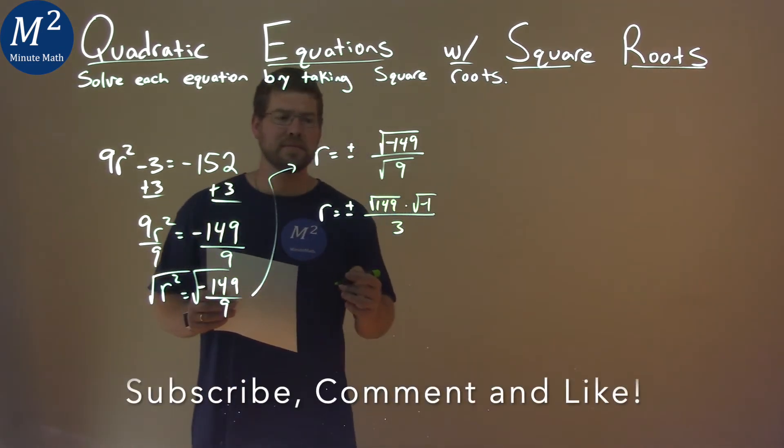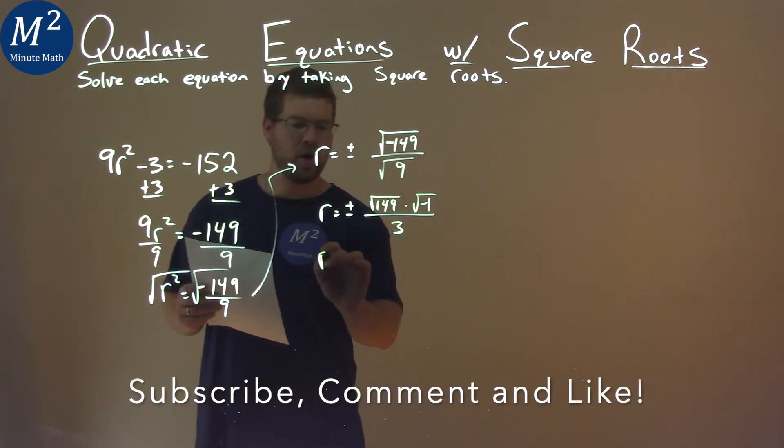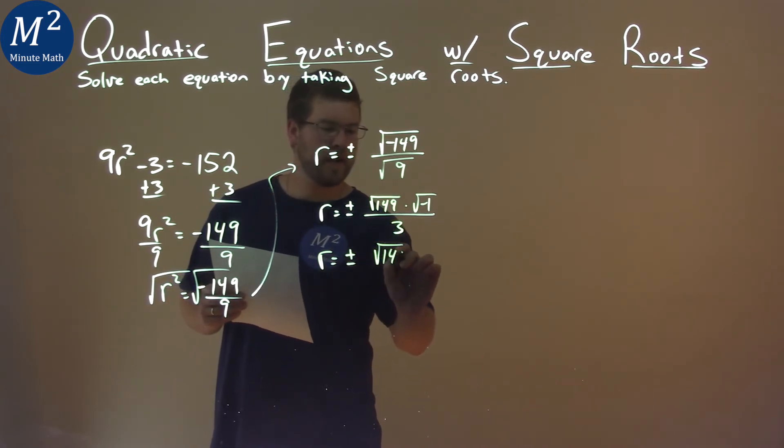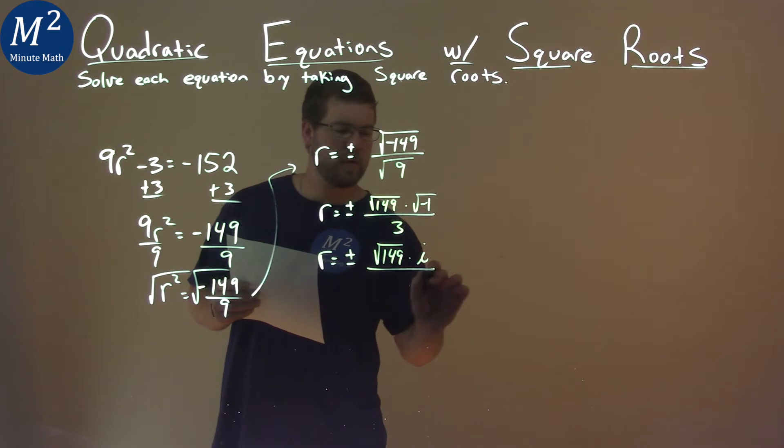What's the square root of negative 1? That's i. So, we have r equals plus or minus square root of 149 times i over 3.